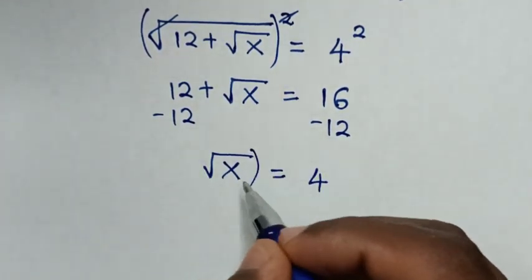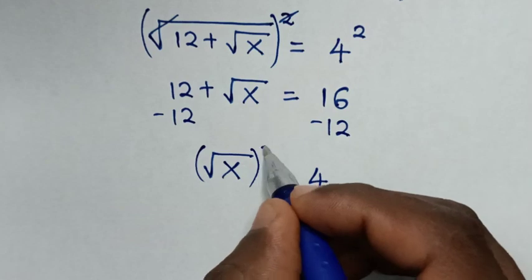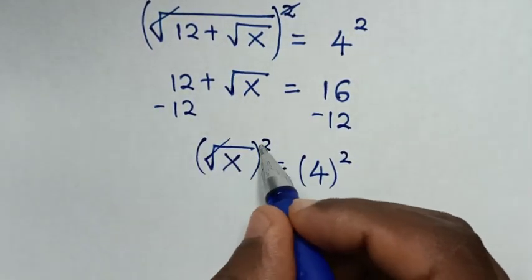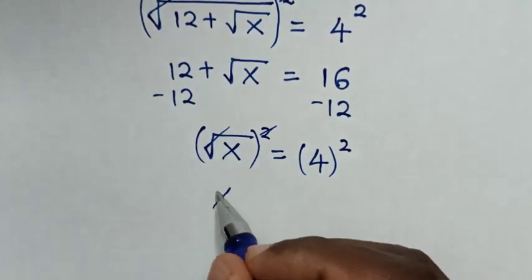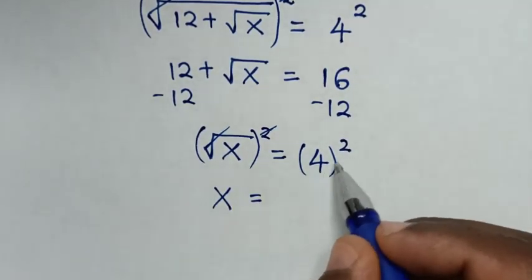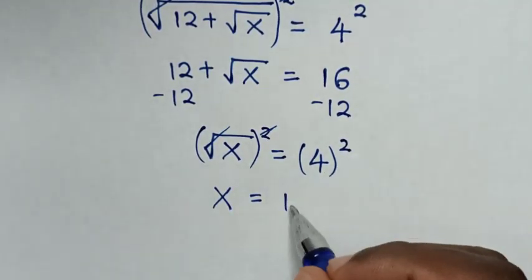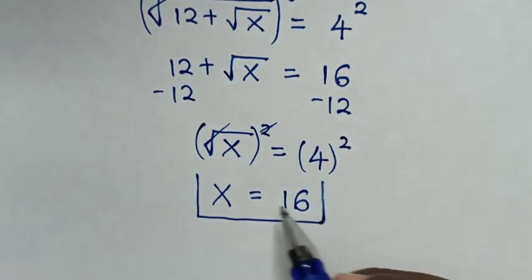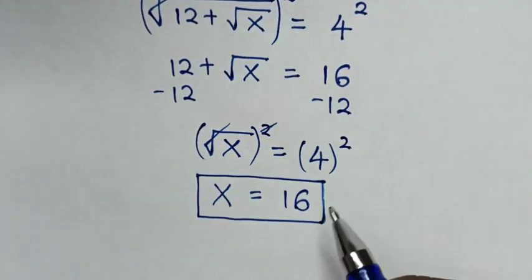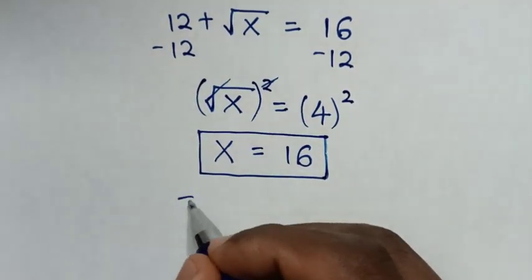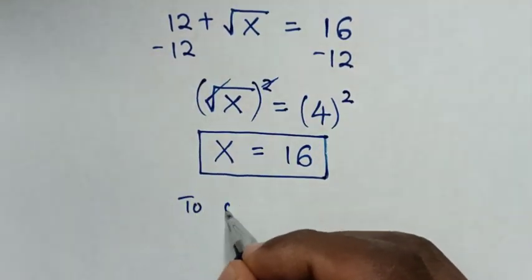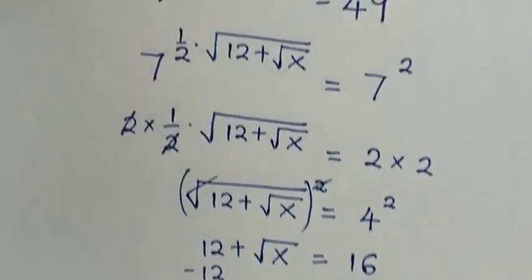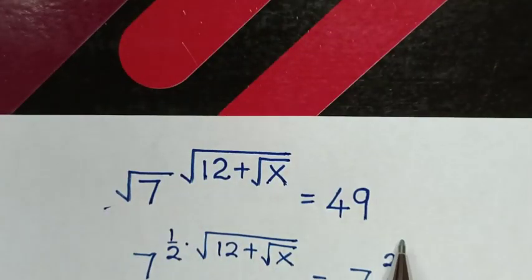Then, to remove this square root, we'll square both sides. This square root will cancel with this square. Then it will be: x is equal to 4 squared, which is 16. Therefore, this is the final answer: the value of x is equal to 16.